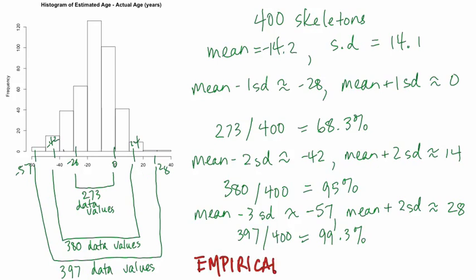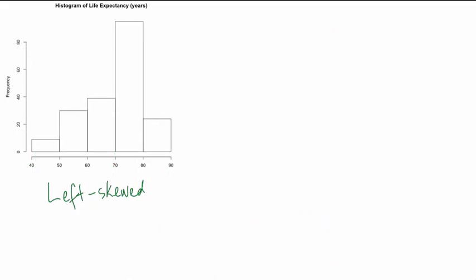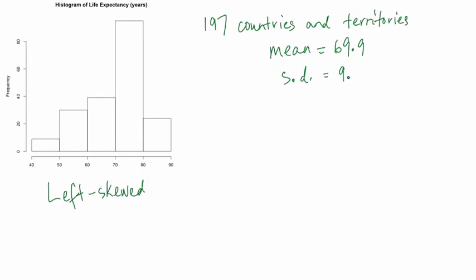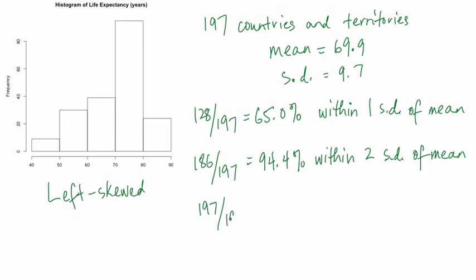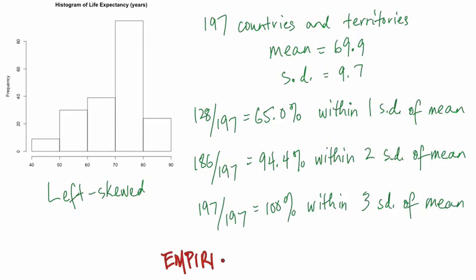We can see that this is very close to the 68, 95, 99.7% expected from the empirical rule. Although it was derived from properties of symmetric and unimodal distributions, the empirical rule works surprisingly well in other situations. For the life expectancy data, which is left skewed, the mean is 69.9 and the standard deviation is 9.7. It can be shown that 128 of the 197 countries and territories, or 65%, are within one standard deviation of the mean; 186, or 94.4%, are within two standard deviations; and all 197 countries and territories are within three standard deviations. Even for this left skewed distribution, we are very close to the 68, 95, 99.7% of the empirical rule.